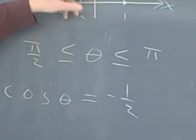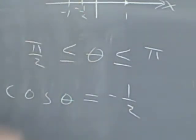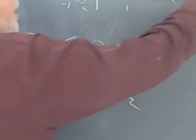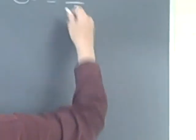But it's not pi over 3. It's in the next quadrant. It's between pi over 3. So it has to be 2 pi over 3. So theta equals 2 pi over 3.